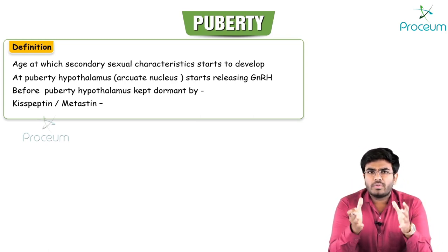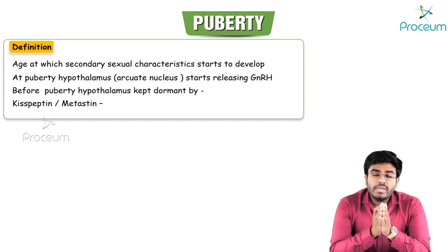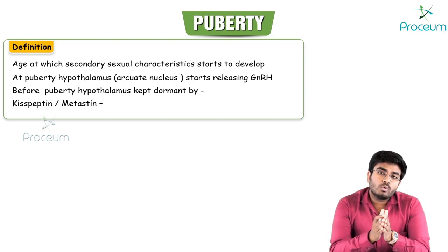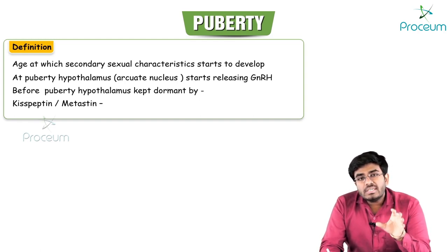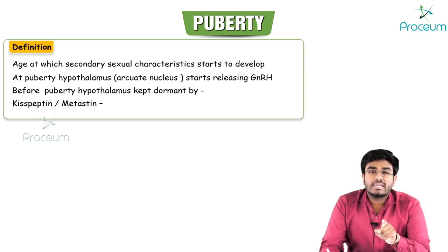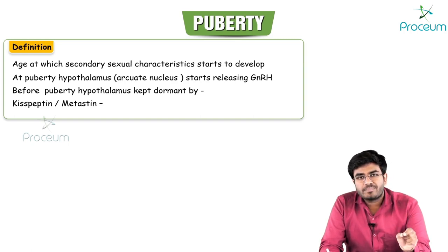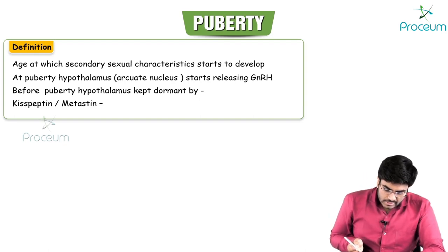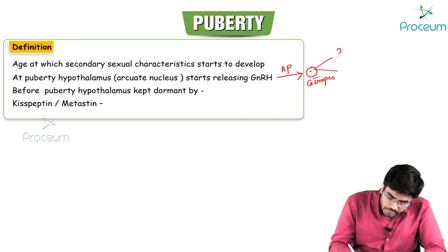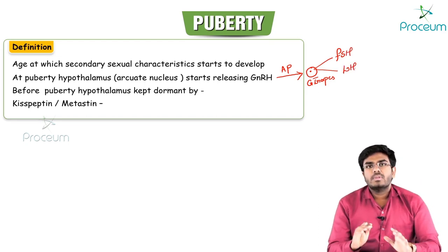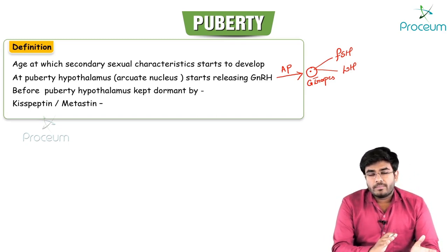During puberty, in a female, the hypothalamus is going to secrete gonadotropin releasing hormones (GnRH). These GnRH hormones come to the anterior pituitary and act on gonadotropes. Under the action of GnRH, these gonadotropes will release the gonadotropins FSH (follicle stimulating hormone) and LH.